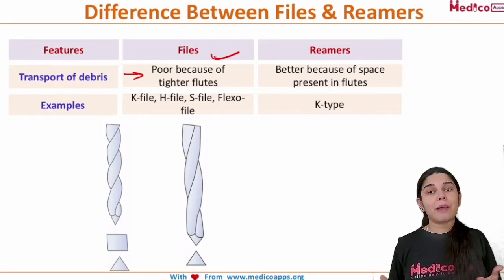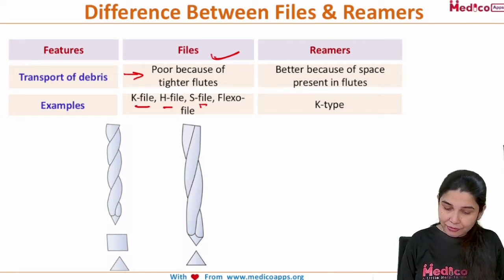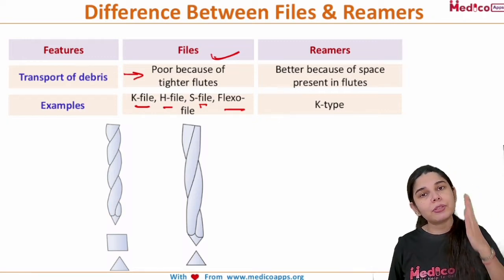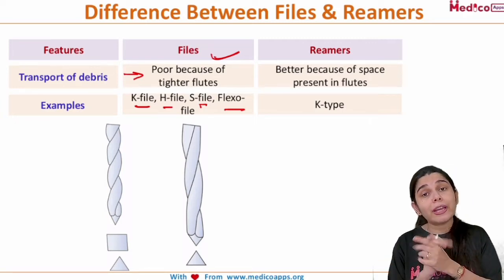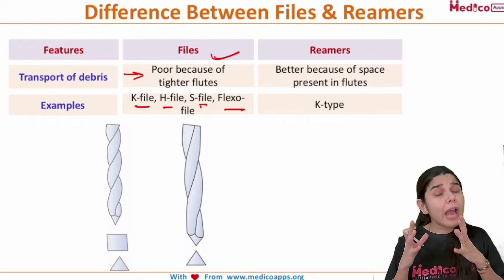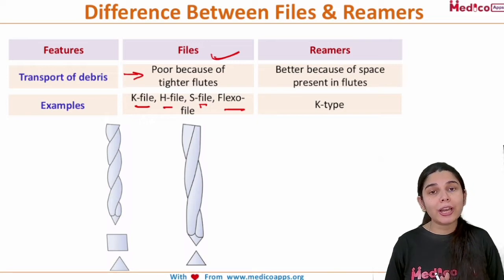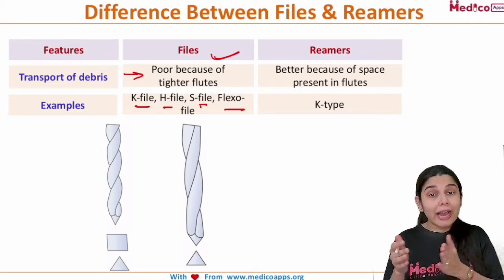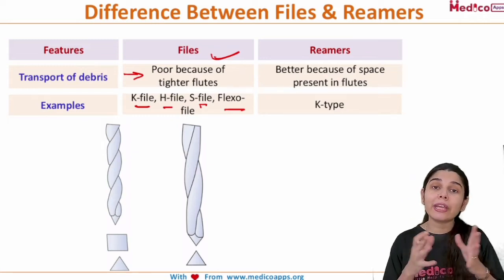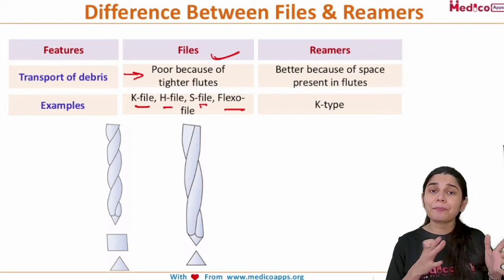For examples: files include K-file, H-file, S-file, and Flexo-file. You need to remember these names — K-file, H-file, S-file, Flexo-file — because they are useful not only for your examination and PG preparation, but also in your clinical practice. Whenever you perform a root canal, you should know all these differences. The example for reamers is the K-reamer type, which are K-type reamers.